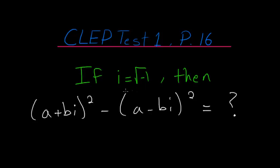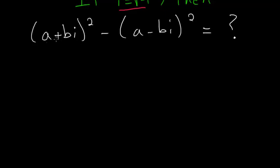If i is the square root of negative one, then what does this expression evaluate to? To solve a problem like this, I'm first going to rewrite this.